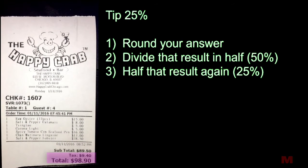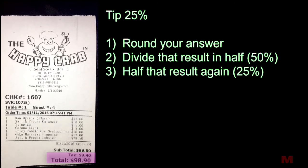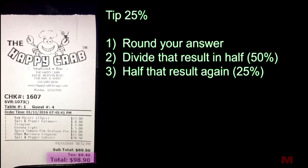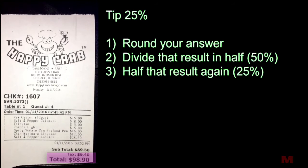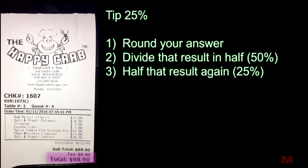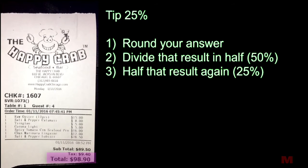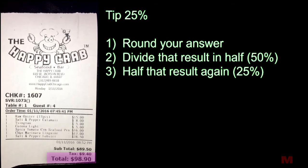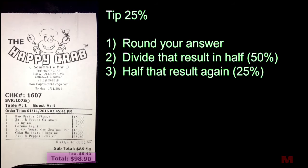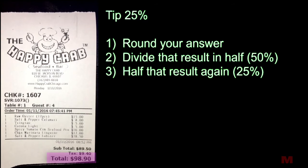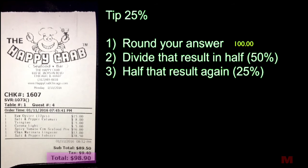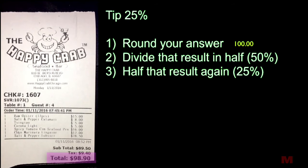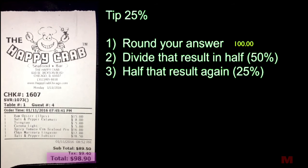Let's go through this last scenario. Let's say you are feeling super generous and you want to tip a baller 25% because you had awesome service. You can still do this in your head. My bill was $98.90 — I'm just going to round that to $100, the nearest easy number. You guys are lucky this number is really easy to work with.